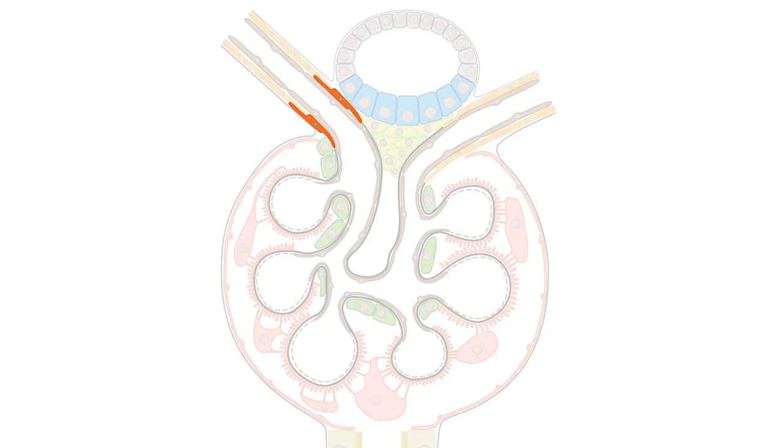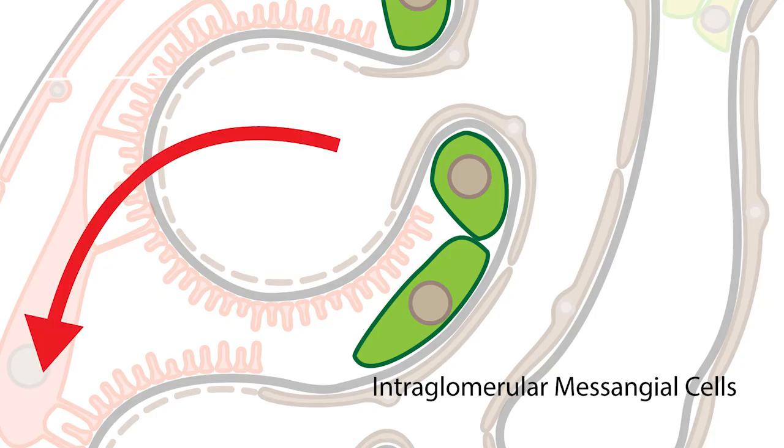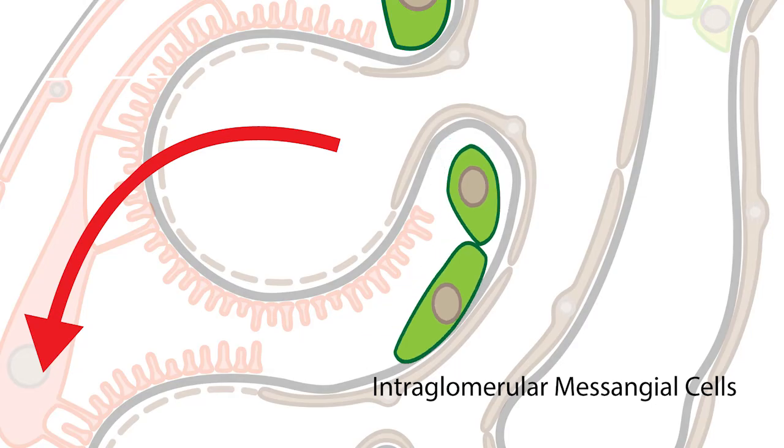Situated between the glomerular capillaries within the Bowman space, the intraglomerular mesangial cells influence the glomerular filtration rate by regulating the glomerular capillary surface area. They do this by altering the state of contraction and relaxation.